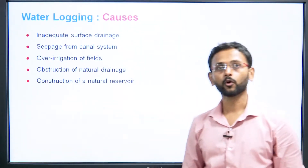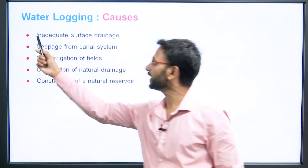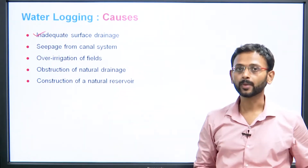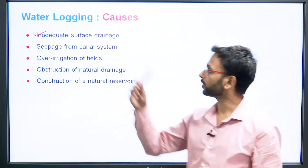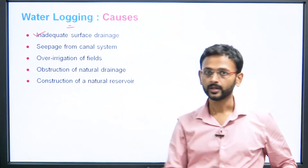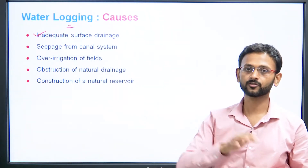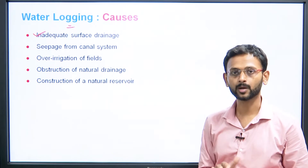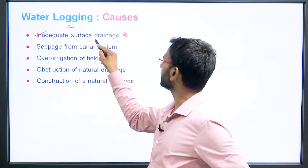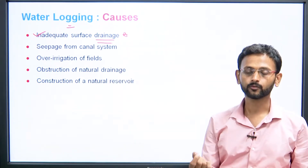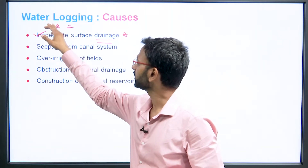Now let us talk about the different causes of water logging — why it happens. First is inadequate surface drainage. If water is present on the ground but it cannot drain off, it causes water logging. Like in cities, water logging and flash floods occur because there is a problem of drainage. If drainage is proper, there is an outlet for the water. Similarly, there is a problem in the fields.